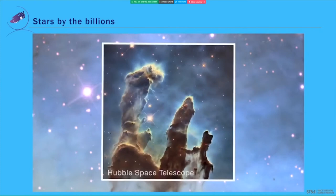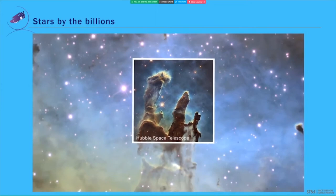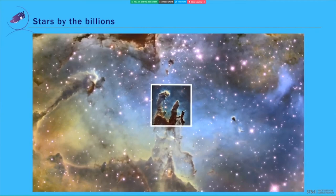As we pull back, you will notice that this region is much more expansive than was captured by Hubble. As we end the video, you will again see the unique shape of the Roman field of view, indicating how much of the region Roman could see in one pointing.